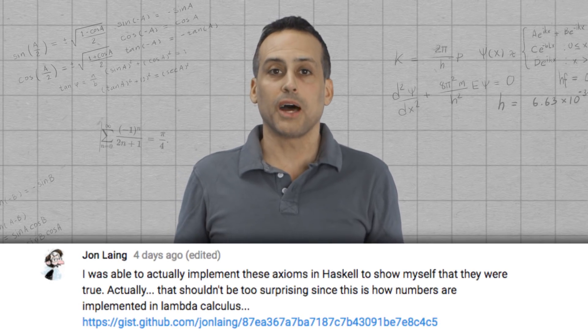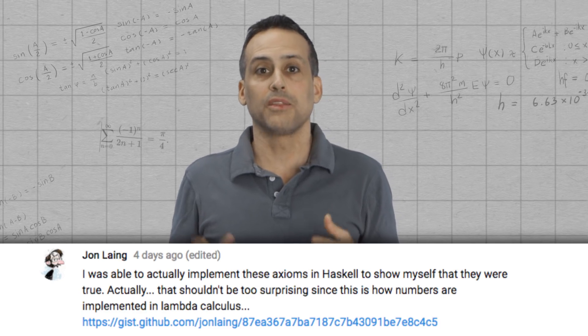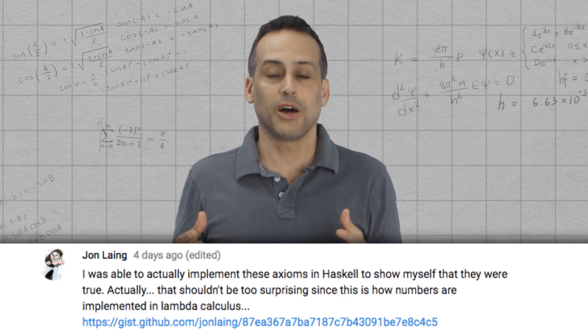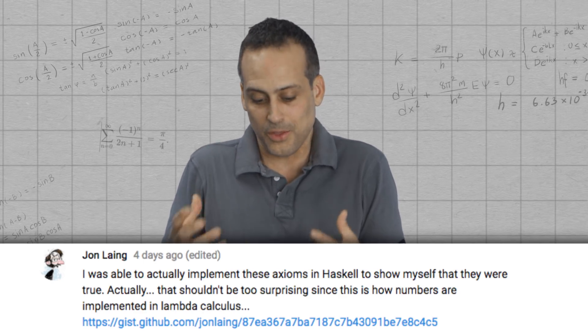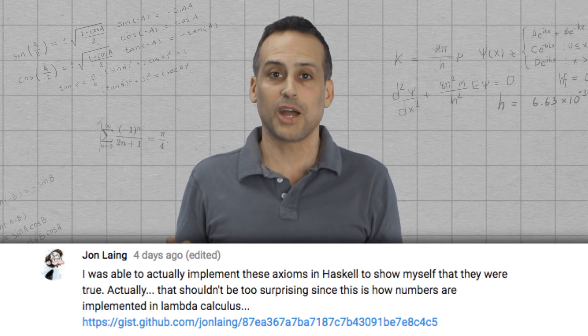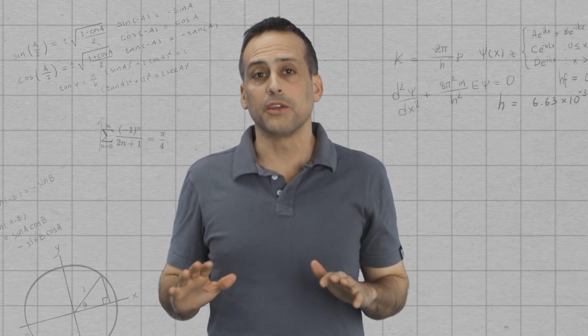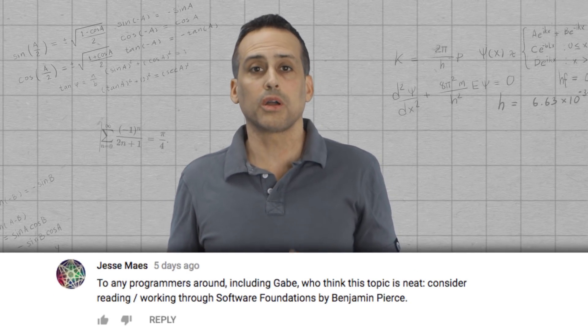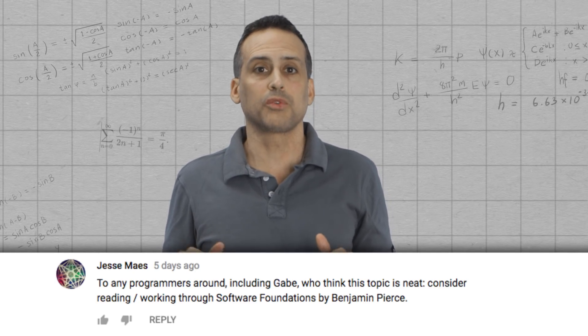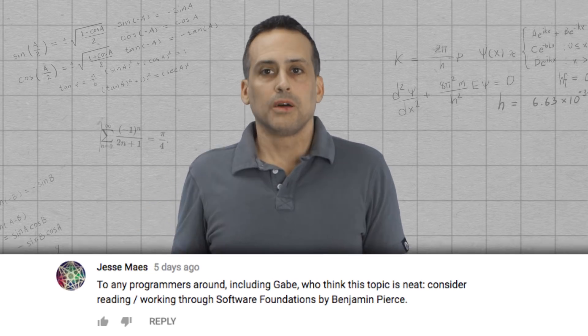John Lang, or Lang, pointed out the similarity between the Peano axiom formulation of the naturals and the lambda calculus. And other people also mentioned explicitly the church numerals. The relationship between all this stuff is no coincidence. This is how the numbers can be formulated from an abstract computer science perspective as well. I encourage you guys to Google that stuff. Lambda calculus, church numerals. On a somewhat related note, Jesse Maes, or Maes, pointed us toward the book Software Foundations by Pierce. I checked it out. Looks like it's a good resource. I added a link to the author's website down in the description of those earlier videos.